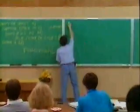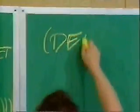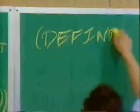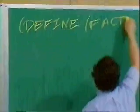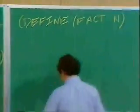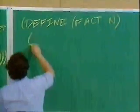I want to write down an imperative version, factorial of n. I'm going to create my two variables.